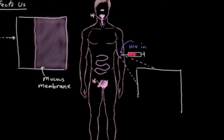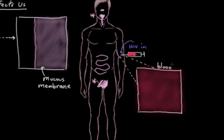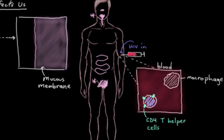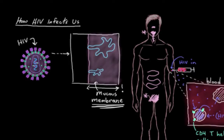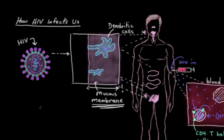We can sort of intuitively see how HIV can attack our white blood cells — like our CD4 T helper cells or our macrophages — when it's directly put in the bloodstream. That bit's a little obvious, but what's less obvious is how HIV gets into our bodies across our mucous membranes, because they look like barriers. It turns out that we have these really interesting little immune system cells embedded within and throughout our mucous membranes, and these are called our dendritic cells.